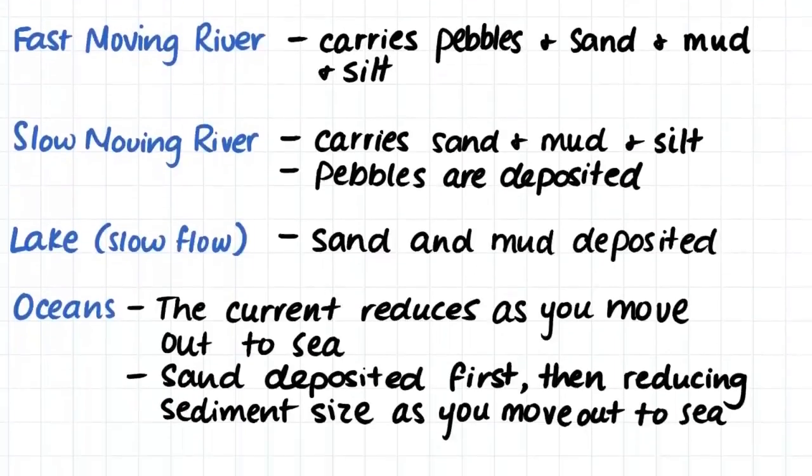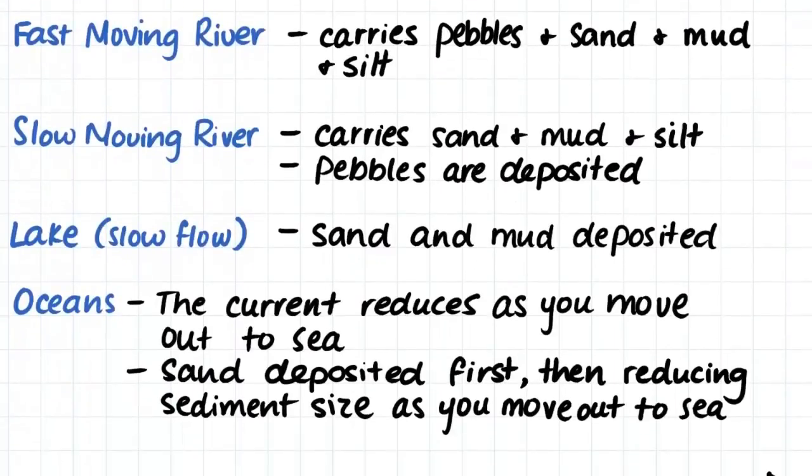Here are a few different types of depositional environments. Fast moving rivers will carry pebbles, sand, mud and silt sized particles. But slower moving rivers will only be able to carry sand, mud and silt and the pebbles will be deposited in these regions. Lakes, which are quite slow flowing if they're flowing at all, will be able to carry sand and mud. But often this sand and mud will be deposited within the lake.